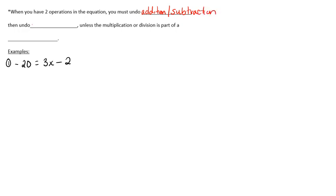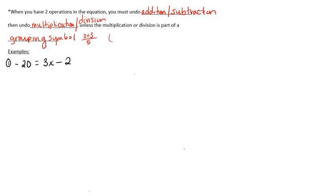You must undo addition and subtraction first in a two-step equation, then undo multiplication and division. The only exception is when the multiplication or division is part of a grouping symbol. For example, if the whole expression is being divided, you have to multiply to clear that grouping symbol before subtracting. So generally: undo addition and subtraction first, then multiplication and division, unless they are part of a grouping symbol.